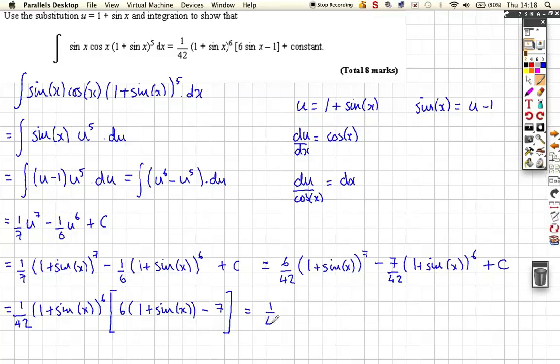So that gives us 1 over 42, 1 plus sine x to the power of 6 on the outside. And then on the inside, we've got 6 sine x from this bracket, from that link there. And then we've got to do the 6 minus 7, which is minus 1. And then we are finished. Plus our constant of integration.